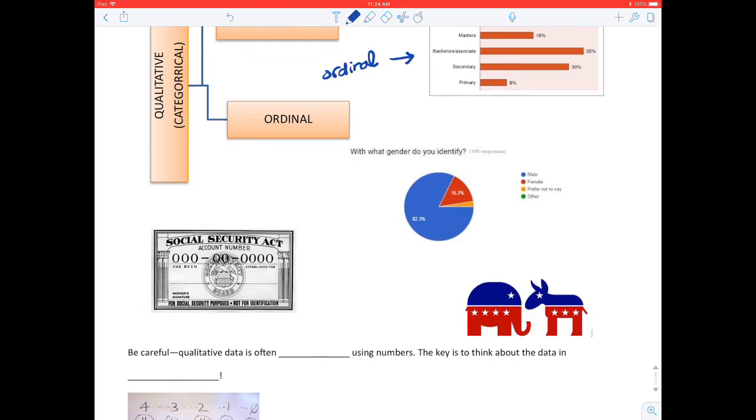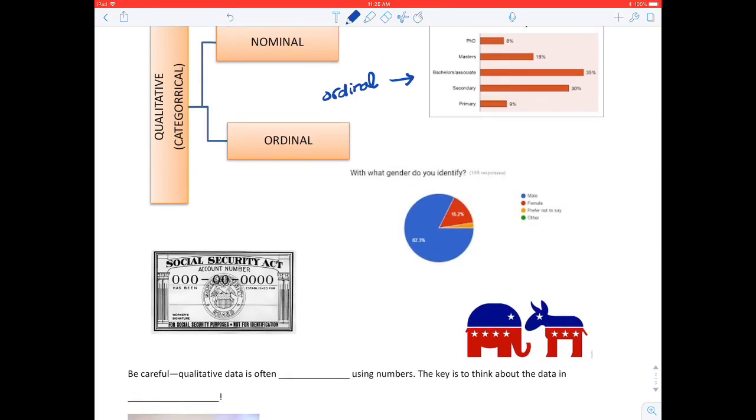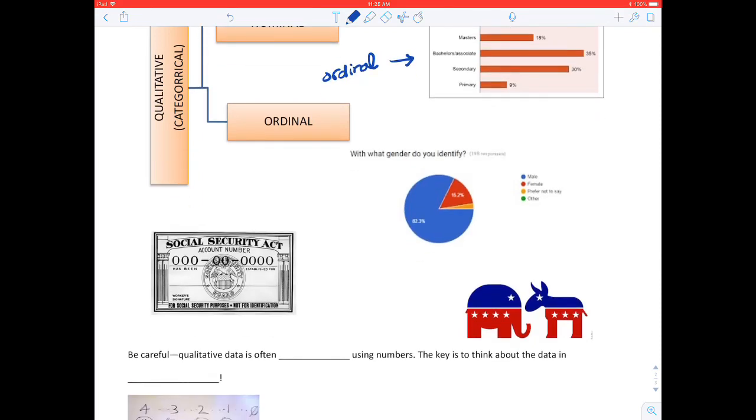So, all right, what about gender? We've got four measures here: male, female, prefer not to say, or other. And this is called a pie chart. The other one was a bar chart. Those are very typical ways to illustrate qualitative data. And here, you know, there's no ranking here. There's no real thought for saying male would be one, female would be two, prefer not to say would be three, and other would be four. So here, this one would be definitely nominal.